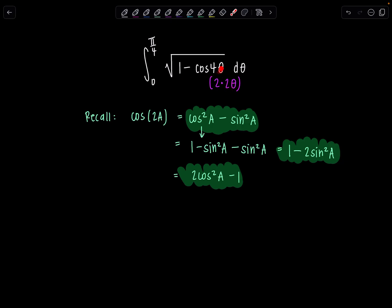In order for me to proceed with integrating, it would be so lovely if this 1 was not here underneath the radical. So, I want 1 minus, hopefully, something that would cancel with this 1. So, I'm going to go with this second option here, 1 minus 2sin²A. But since we have cosine of 4θ, which is cosine of 2 times 2θ, the equivalent identity would be 1 minus 2sin²2θ.